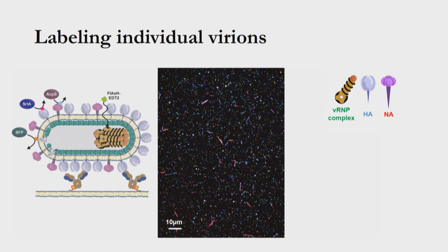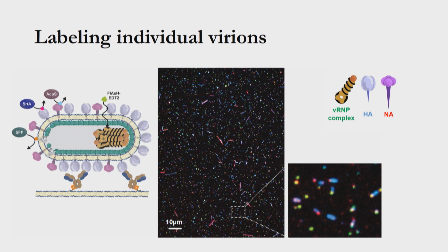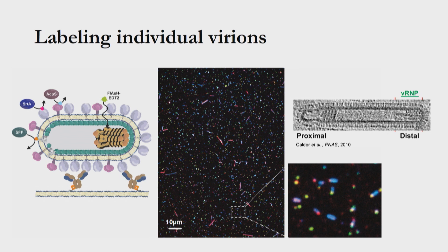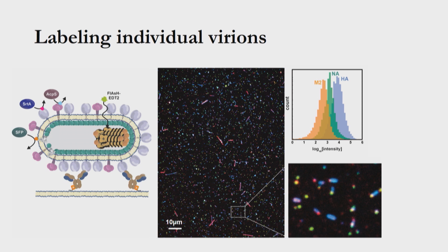This is a field of view of filamentous variants — some are up to 10 microns or longer in length. Three different proteins are labeled: the vRNP complex in green, hemagglutinin in blue, and neuraminidase in red. Zooming in, we can start to resolve features with subviral resolution; in particular, the green foci at the tips of many filaments correspond to the viral genome, consistent with electron microscopy. We can use images like this to measure the abundance of different proteins. Looking at the three most abundant membrane proteins of viral origin — HA, NA, and M2 — we get relative abundances consistent with population-averaged biochemical methods.